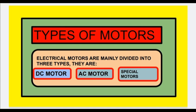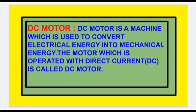Electrical motors are mainly divided into three types: DC motor, AC motor, and special motors. DC motors are operated with DC and AC motors are operated with AC. Special motors can be operated with AC, DC, or both.